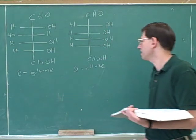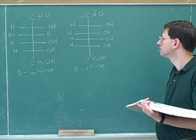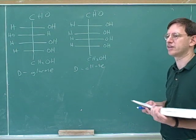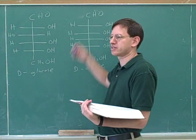So what's the relationship between D-allose and D-glucose? There's one stereocenter that is different, so it's a diastereomer. Yeah, they're diastereomers. These are diastereomers. They also are epimers because they only differ at one stereocenter.